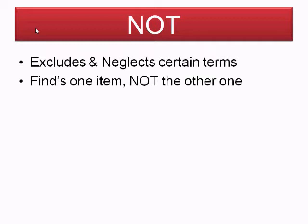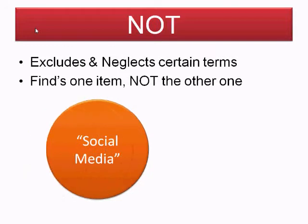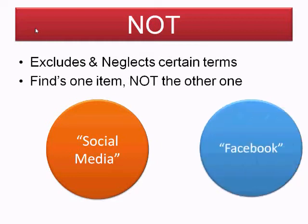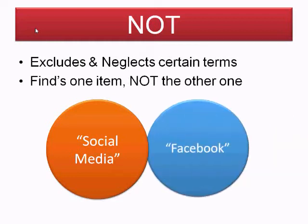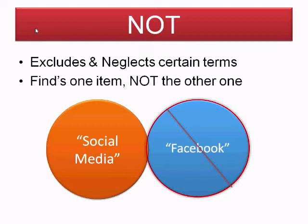For instance, we will use a Venn diagram to say we want to search social media, but every time we search social media, we are bombarded with constant news of Facebook. We want to research social media NOT Facebook. Let me take it to the internet once again and explain this further.